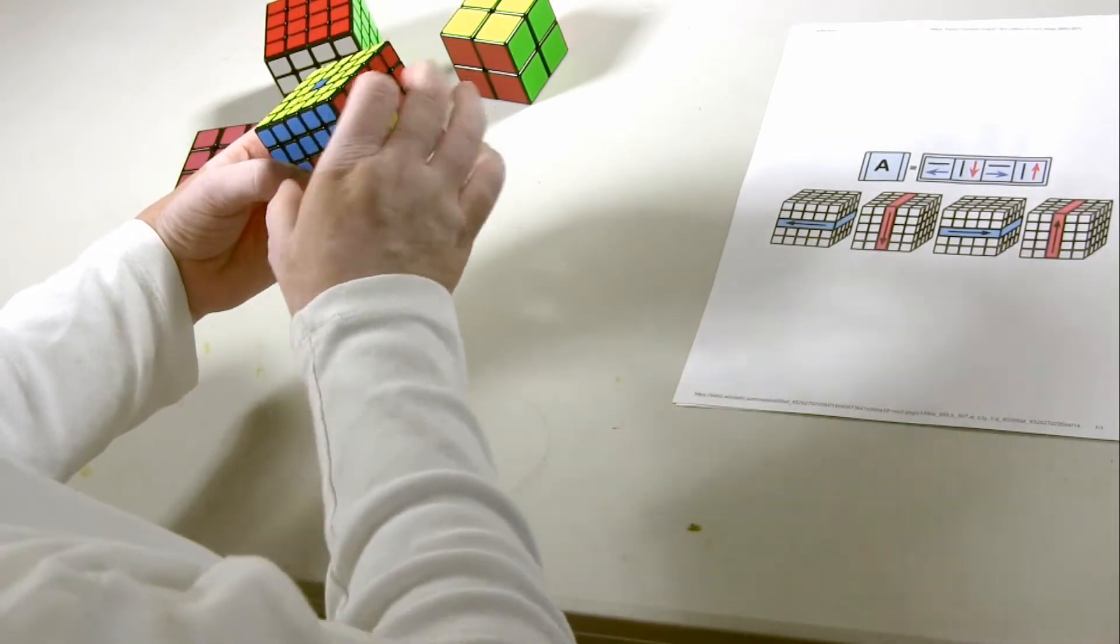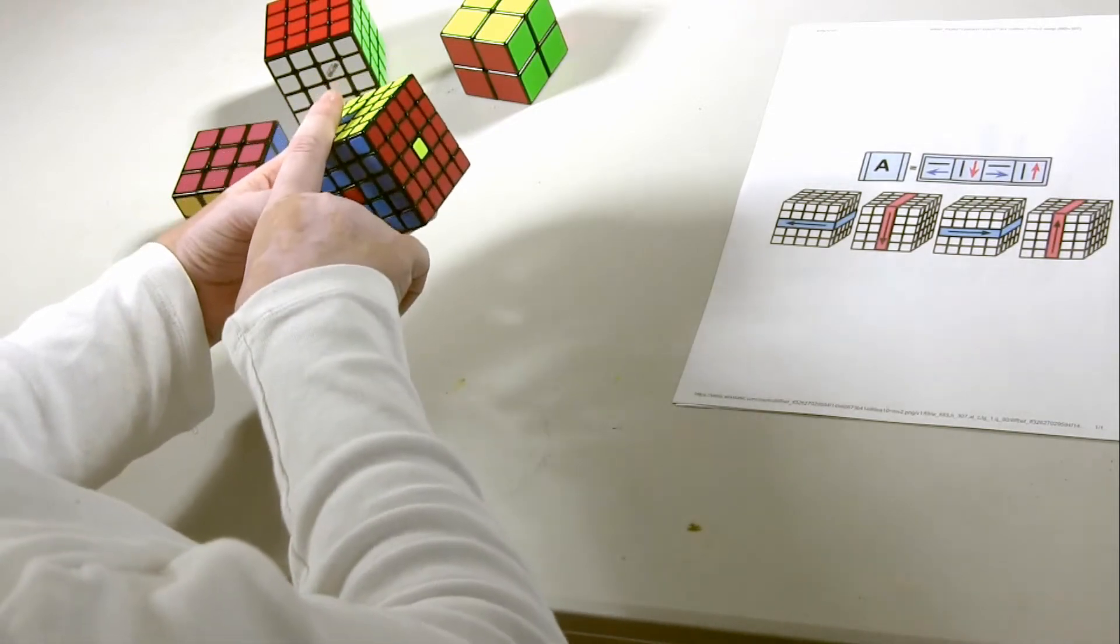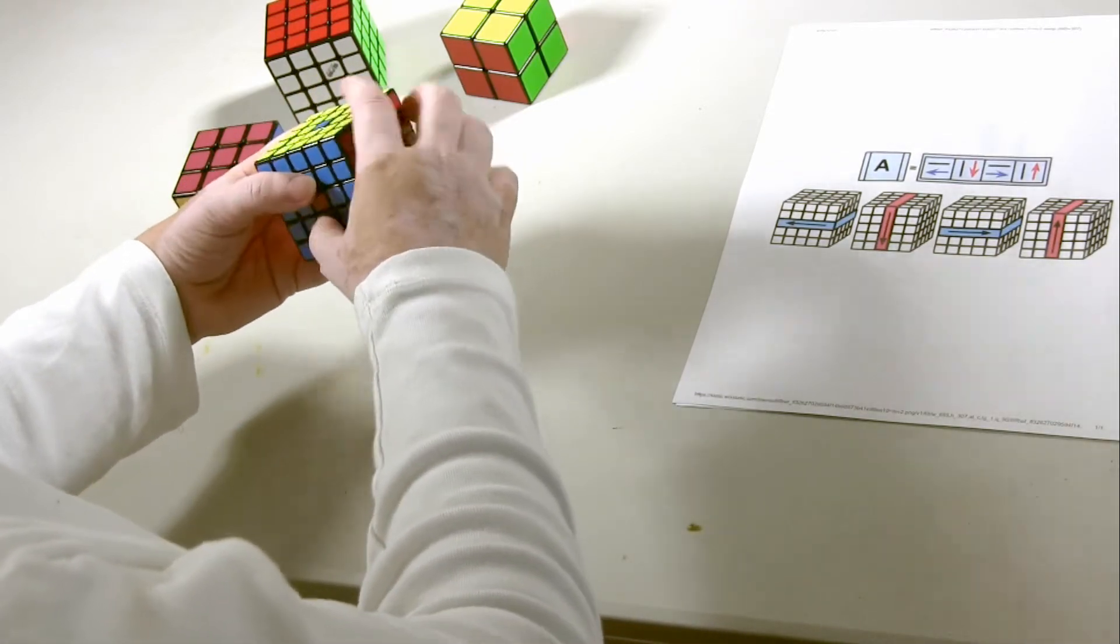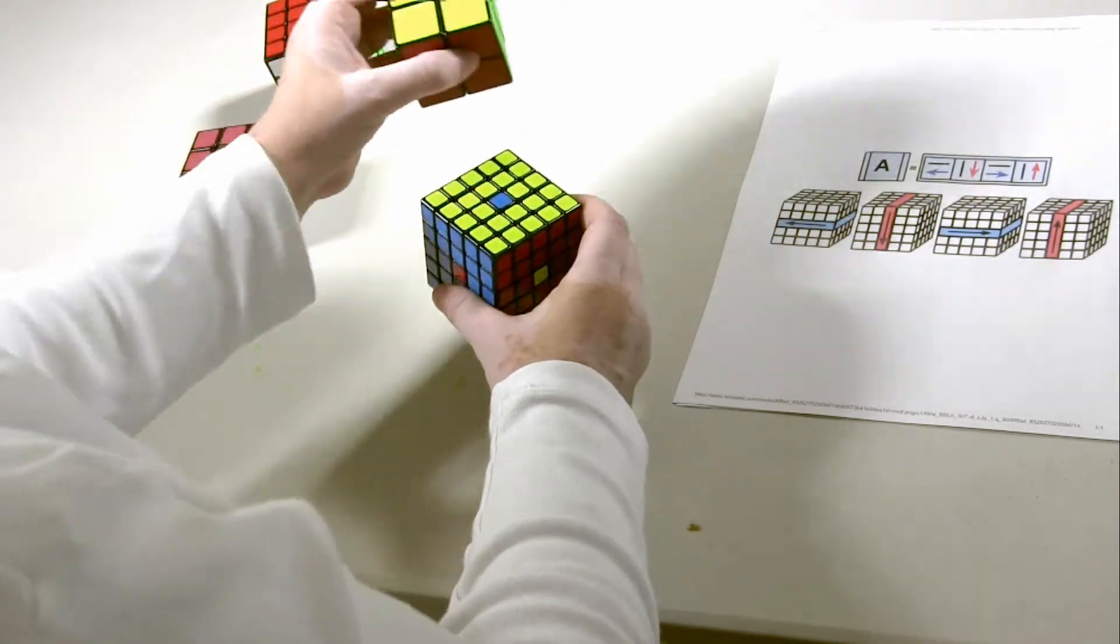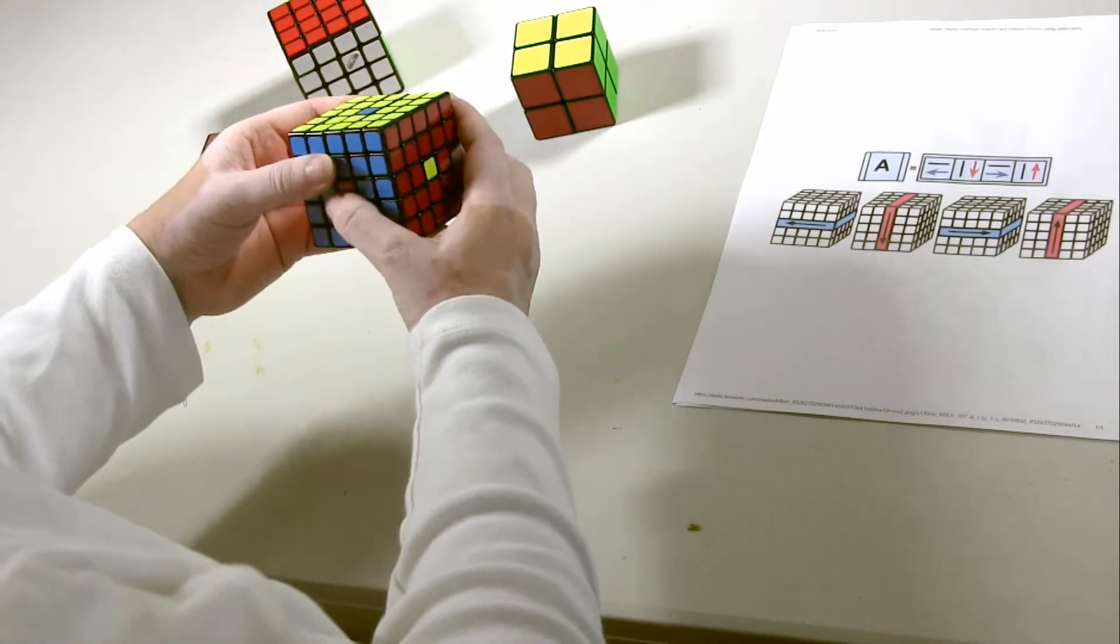This rotates only the center piece, only the absolute center piece rotates the right front and top. You won't use this on a 2x2 or a 4x4 because they don't have a center piece. So this is only for the odd numbered cubes.